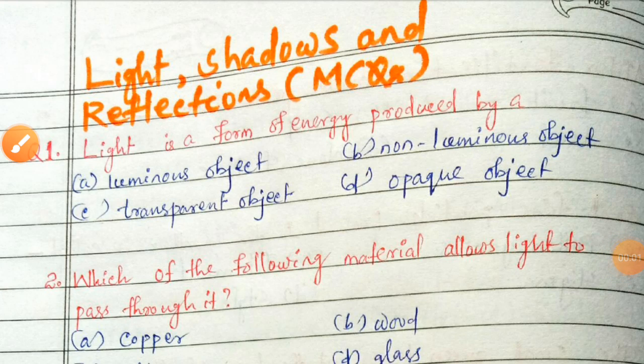Hello everyone, you are welcome to Satya and Srishti Classes. Today we are going to discuss some multiple choice questions of Chapter 11, Class Science — that is Light, Shadows and Reflections. Your first question is: light is a form of energy produced by a luminous object, non-luminous object, transparent object, or opaque object? Light is produced by a luminous object, so option A is correct.